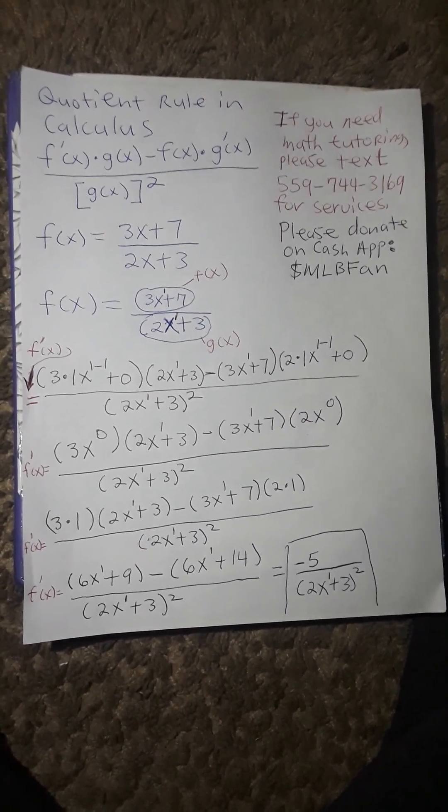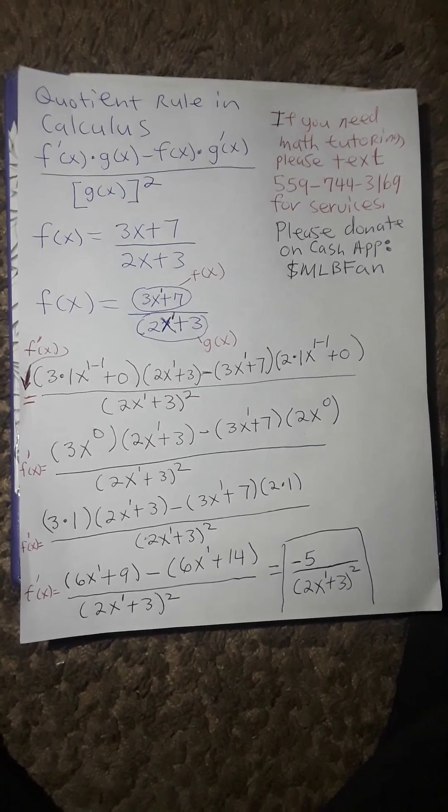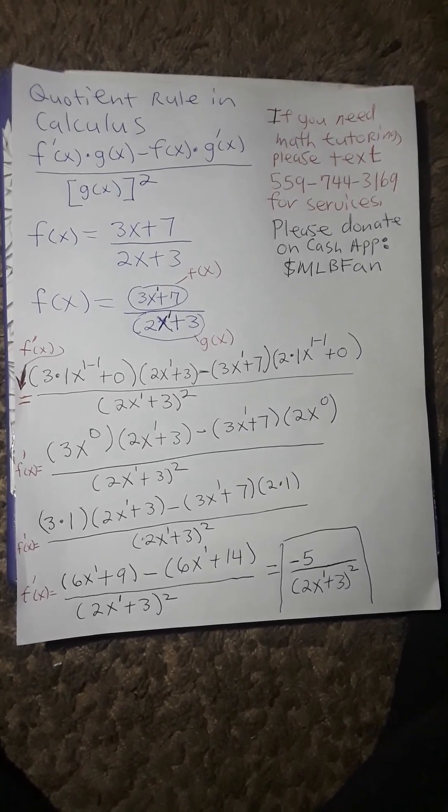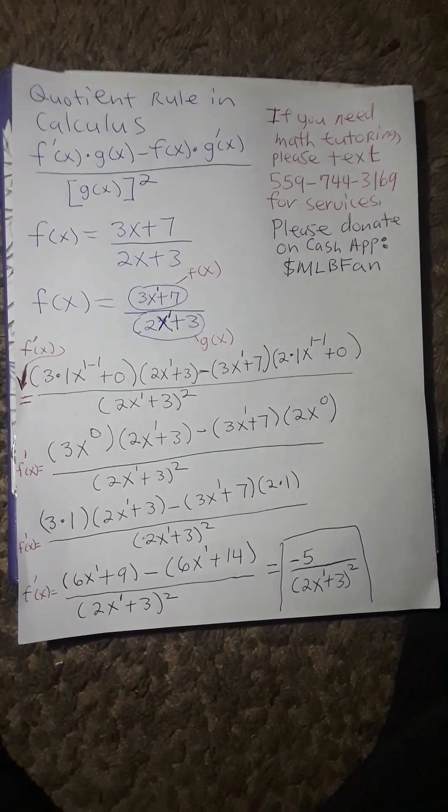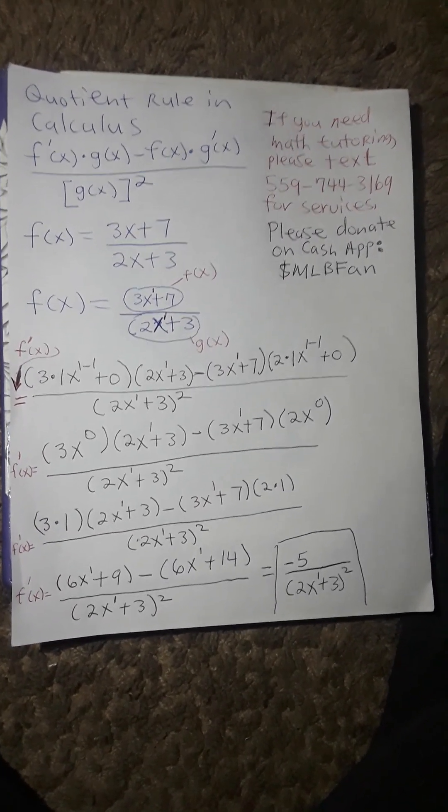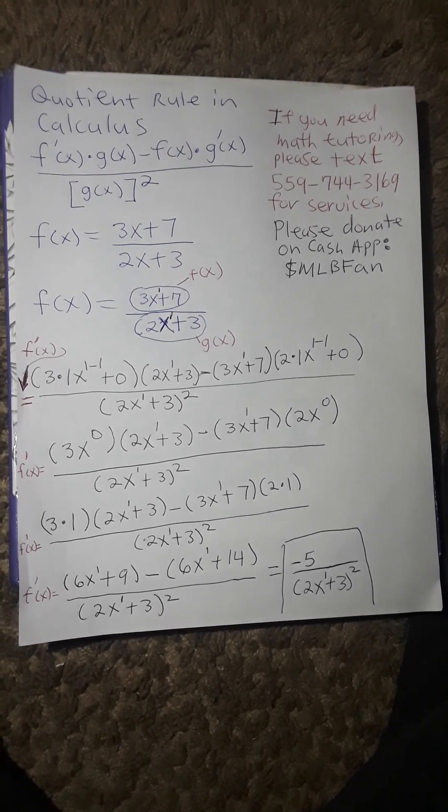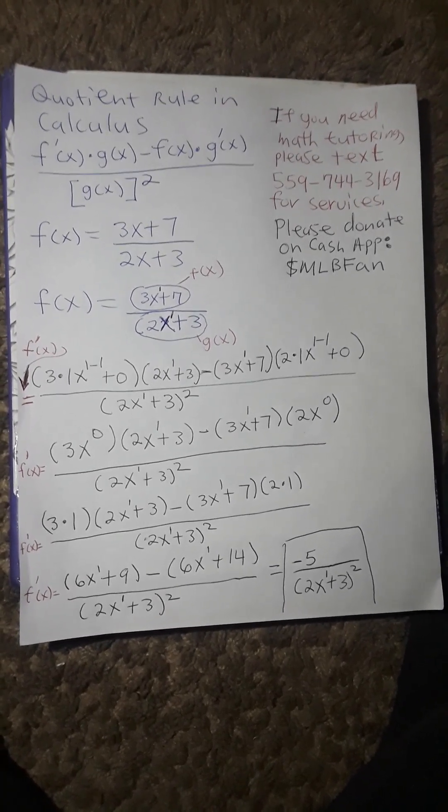f prime of x will equal 3 times 1 x to the 1 minus 1 plus 0. The reason why it's plus 0 is because all constants go to 0. Constants are numbers without a letter or a variable.